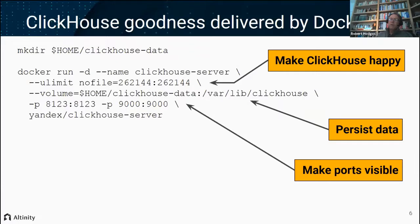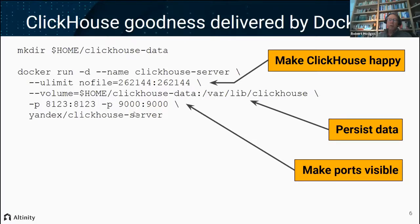Another popular way to run ClickHouse — particularly in build pipelines or on a Mac where builds aren't super stable — is to run it in Docker. This shows the Docker command to set it up. We're using a --volume setting so that data will persist; you know how Docker images have a habit of disappearing. This ensures that if we blow the container away we don't lose our data, and it also allows upgrades. We reroute ports 8123 for HTTP traffic and 9000 for TCP protocol traffic. With a good network connection, you can have ClickHouse up and running in about 60 seconds.